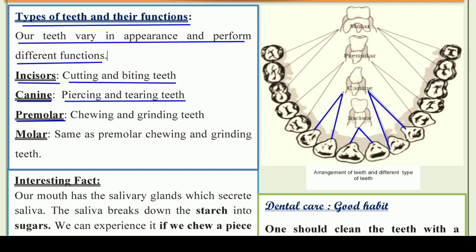Next are premolar teeth. Premolars are chewing and grinding teeth — they chew our food and grind it into soft, small pieces, like a mixer grinder. You can see that after the canine teeth, on both the left side and right side, the next teeth are called premolars, and they do the work of chewing and grinding the food.